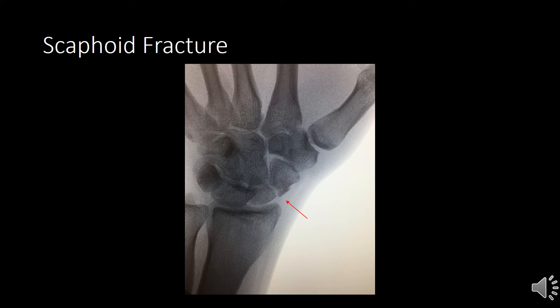Here is an x-ray of a scaphoid fracture. You can see it is a displaced waist fracture with an obvious fracture line.